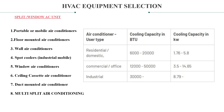We have split or window AC units. First, we have portable or mobile air conditioners. Second, we have floor mounted air conditioners. Third, wall air conditioners. Fourth, we have spot coolers which are used for industrial applications. Fifth is window air conditioners. Sixth is ceiling cassette air conditioners. Seventh is duct mounted air conditioners. And the eighth is multiple split air conditioners.